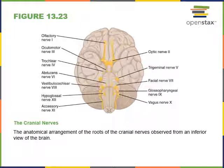Cranial nerve four is the trochlear nerve, a motor nerve that excites contraction of the superior oblique eye muscle—a muscle that rotates the eye in its socket. It extends from the midbrain to the superior oblique eye muscle.